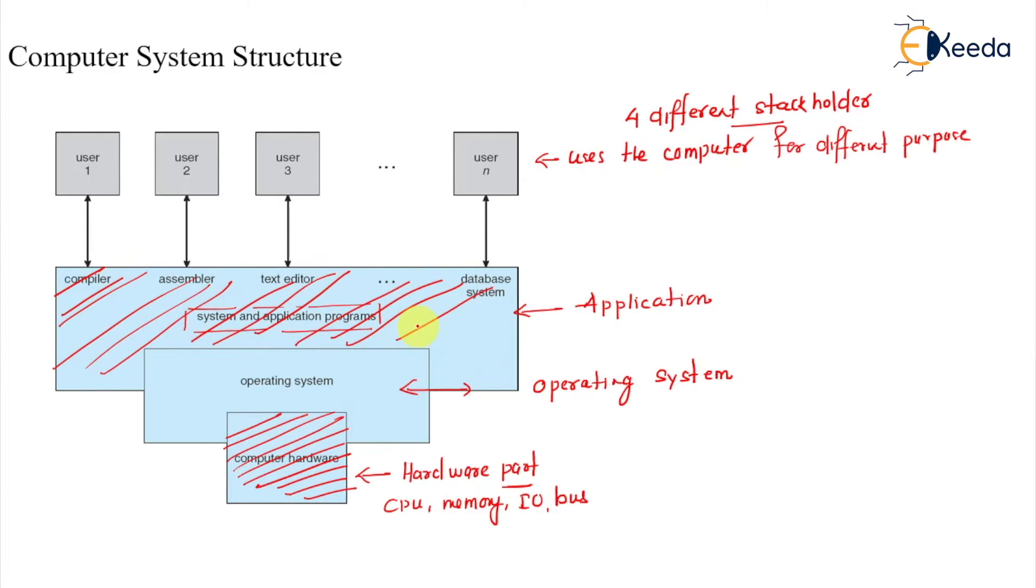Now you can see here that operating system lies between the hardware and this part. We will define operating system, but you can think of it that operating system acts as intermediary between programs. That category is your system or it can be an application program.